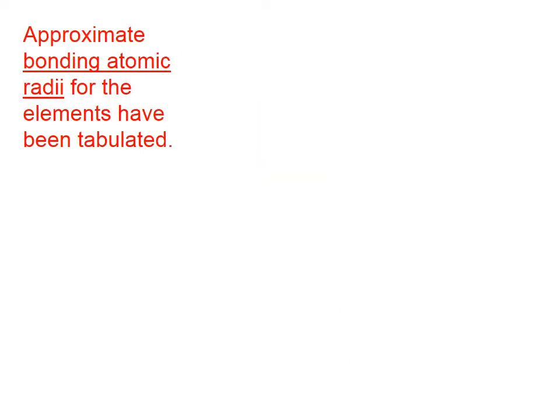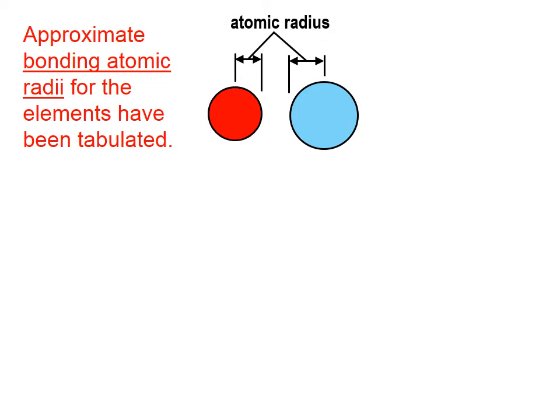Approximate bonding atomic radii for the elements have been tabulated. So if we have two atoms here, if we go from the nucleus to the outer edge of where the electrons are, of course that edge is a little bit fuzzy, it's a little bit debatable, we call that the atomic radius.